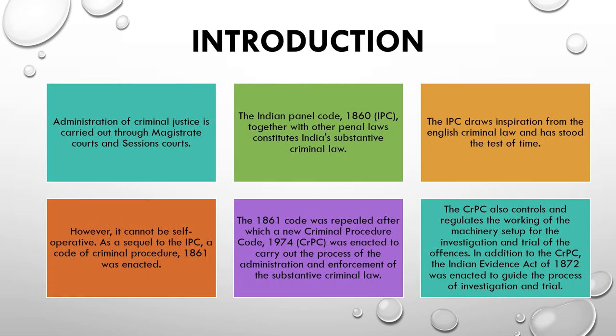In India, the administration of criminal justice is carried out through magistrate courts and session courts. Criminal law is a combination of three acts: the first is the Indian Penal Code, the second is the Criminal Procedure Code, and the third is the Indian Evidence Act. The Indian Penal Code is substantive law in which all offenses or crimes and their punishments are described. The Criminal Procedure Code was enacted to carry out the process of administration and enforcement of substantive criminal law. The Indian Evidence Act was enacted to guide the process of investigation and trial. So, criminal law is basically a combination of these three acts.